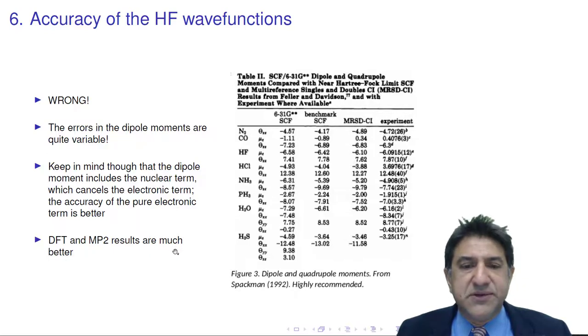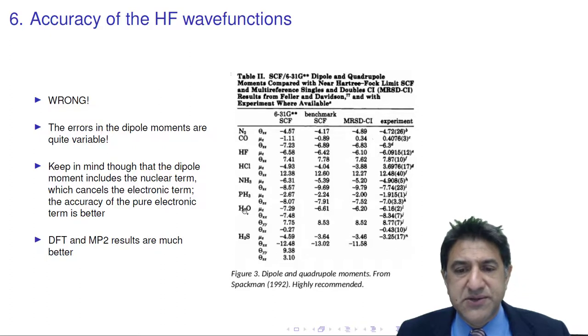So the DFT and MP2 results are much better. They're closer to these results here. But essentially, CO is a little bit of a special case. If we go to H2O, for example, we have benchmark SCF results of minus 6.6, and the very highest level calculations are minus 6.2. This is a much bigger dipole moment. It is much more dominated by electrons in here with this electronegative atom. And so the cancellation of the nuclear and electron terms is not as great. And so we have a smaller absolute error.